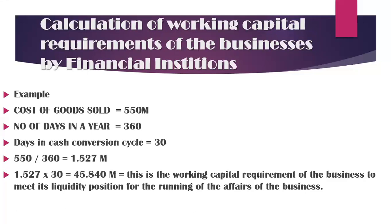To repeat: the bank takes the cost of goods sold, divides it by the number of days in a year, and finally multiplies by the cash conversion cycle. Whatever amount comes, they simply approve it in favor of those customers who have put the request to the banking industry for meeting their daily needs or liquidity position. Thank you, hope you have understood how the banking industry calculates the working capital requirements of different borrowers.